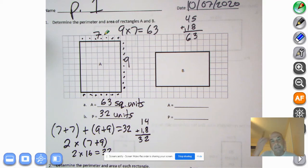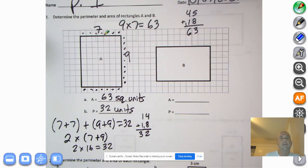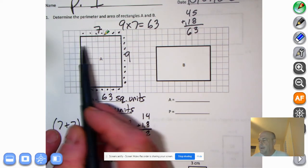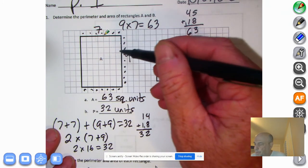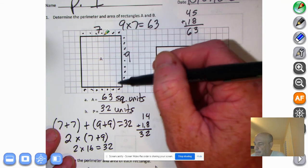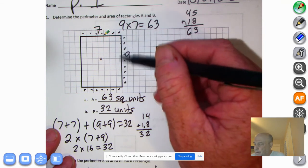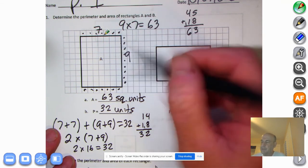Number one says, determine the perimeter and area of rectangles A and B. I already did A for you and I was going to do A with you, but my big dog came running in barking. So let's take a look at what we got going here. We counted how many squares this way? Seven. And one, two, three, four, five, six, seven, eight, nine this way.